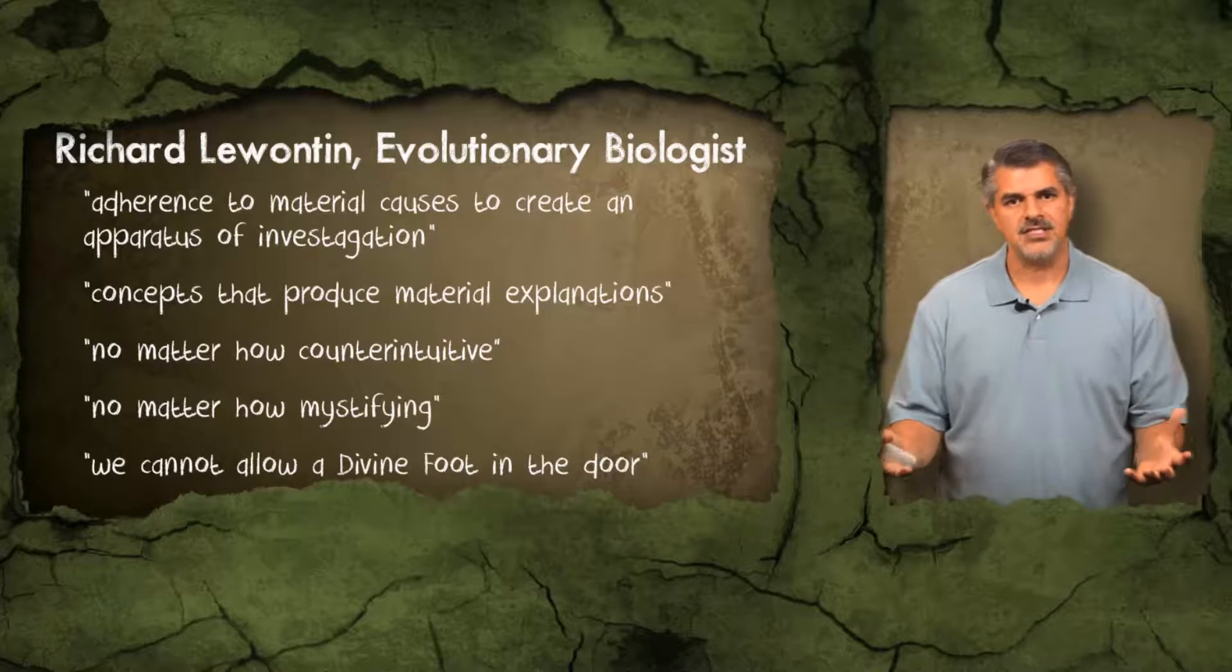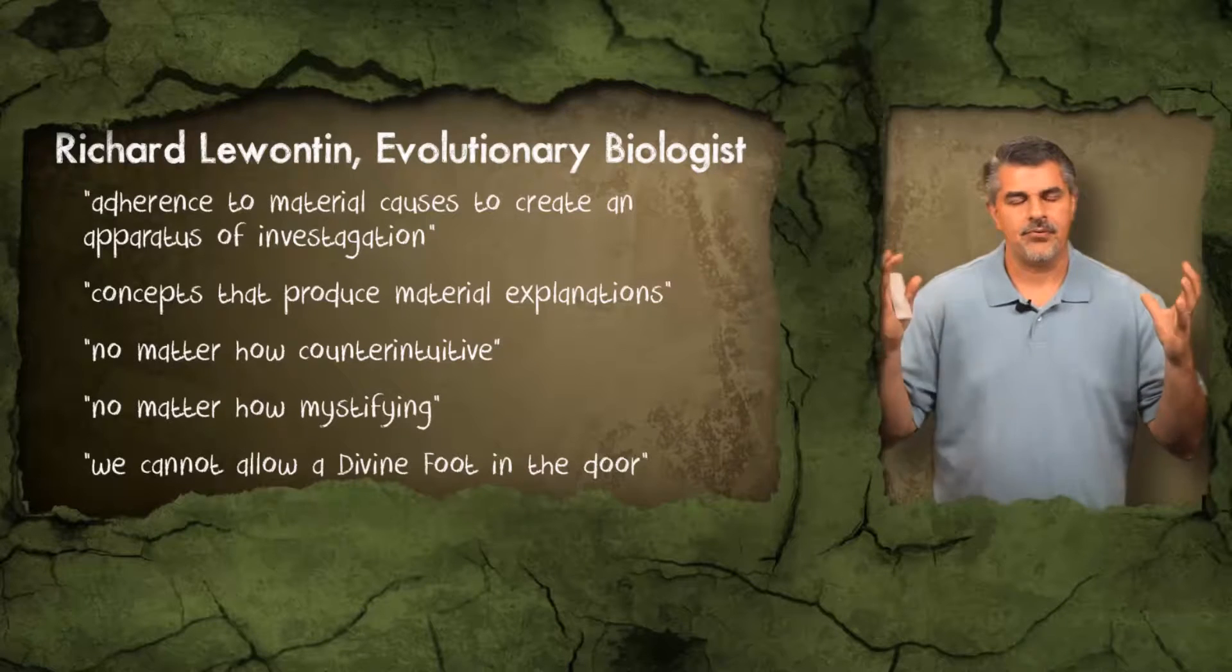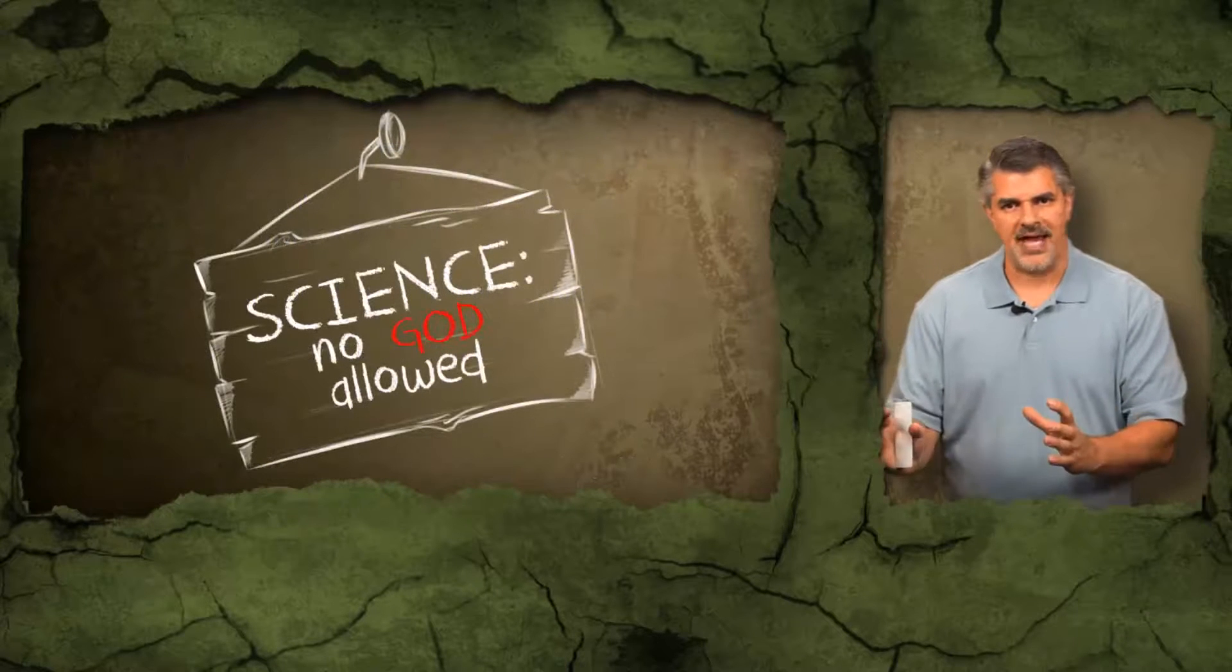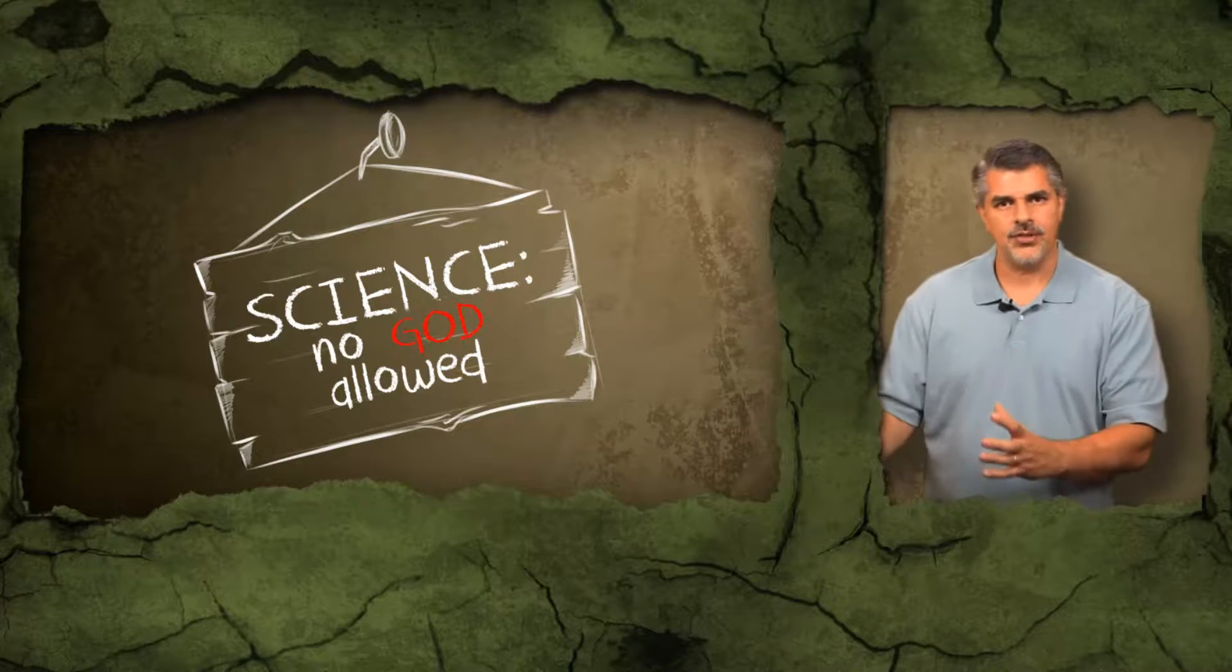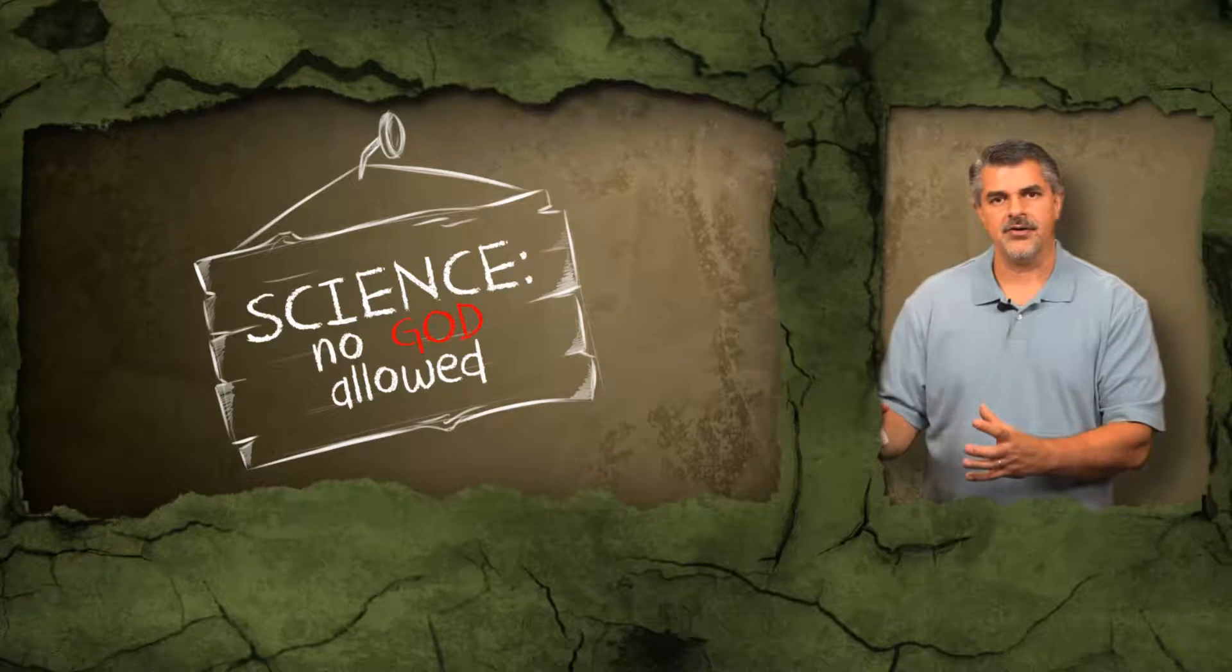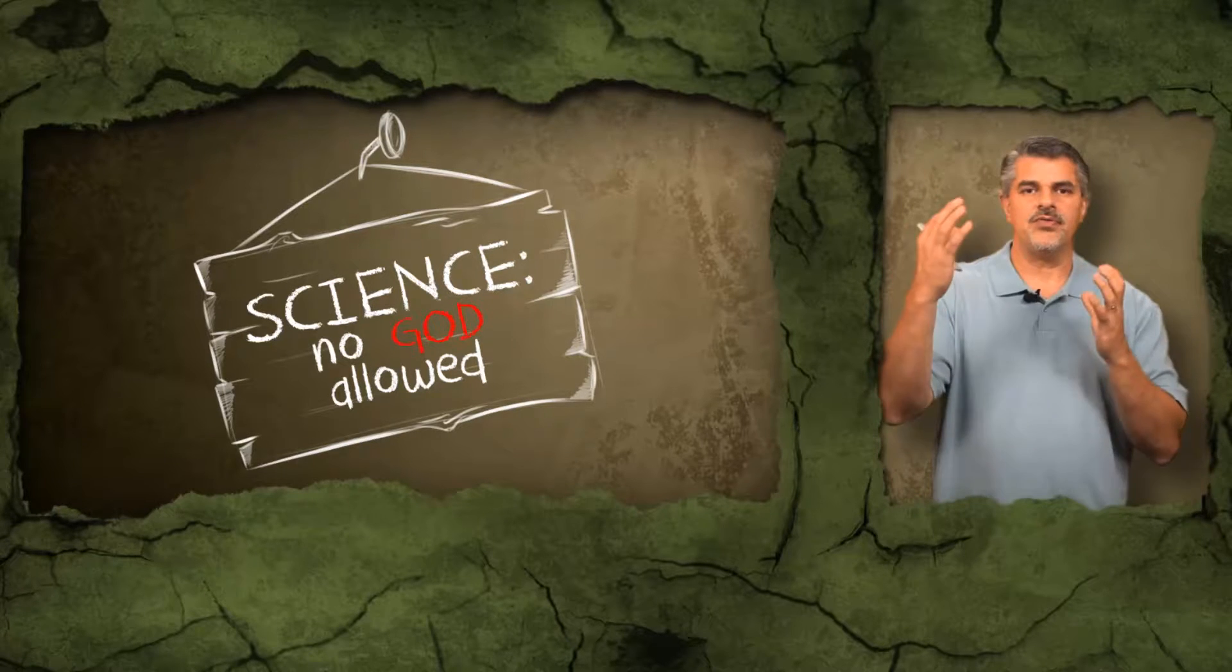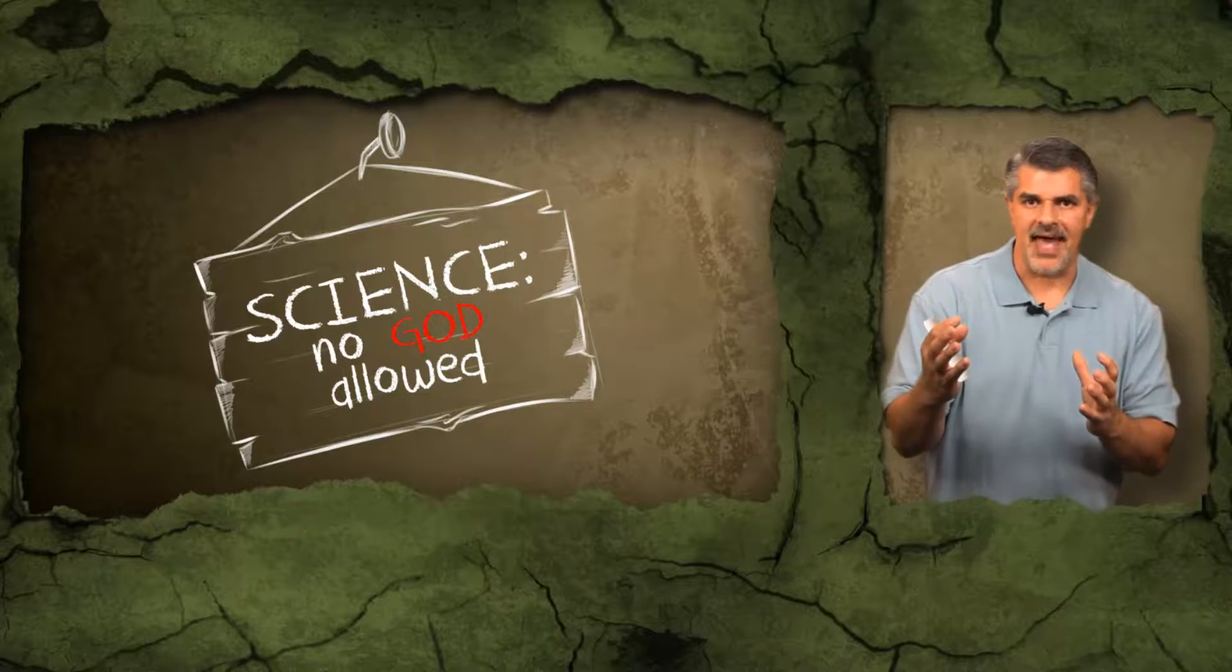What Richard Lewontin is basically saying is this: is that the scientific community has a pre-commitment to materialism, to methodological naturalism, to only mechanistic explanations for the origin of life and the history of life on Earth. And because of that commitment, even if the evidence is pointing to the work or the involvement of a creator, the scientists cannot go down that path.